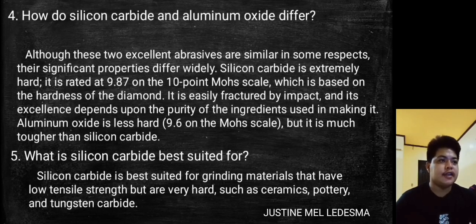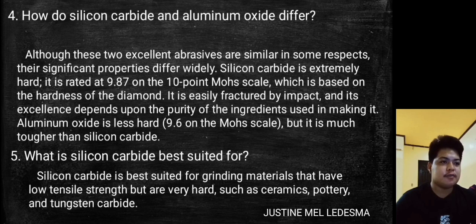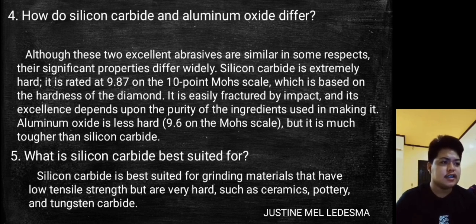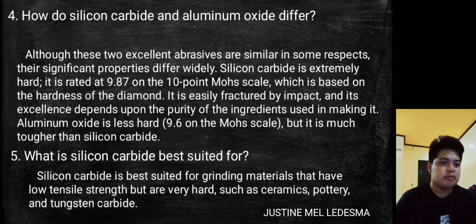How do silicon carbide and aluminum oxide differ? Silicon carbide is extremely hard — rated 9.87 on the 10-point Mohs scale, which is based on the hardness of diamonds. It is easily fractured by impact. Aluminum oxide is less hard at 9.6 on the Mohs scale, but it is tougher than silicon carbide.